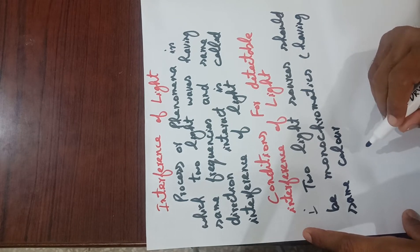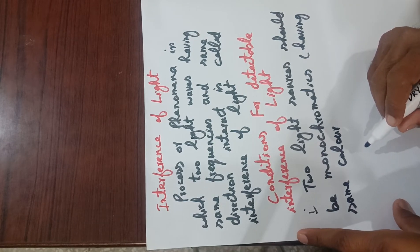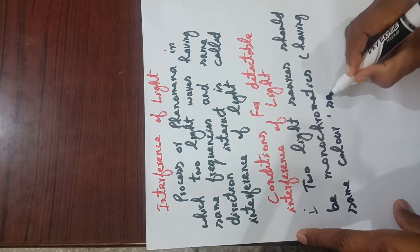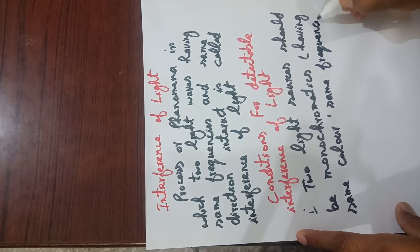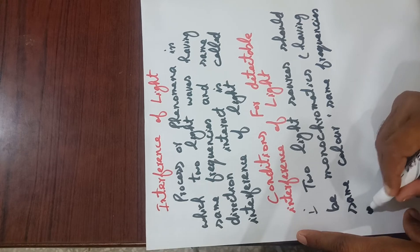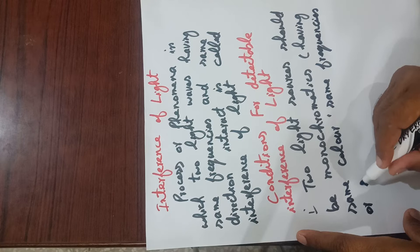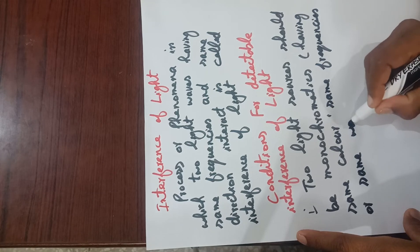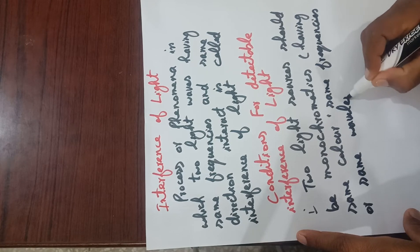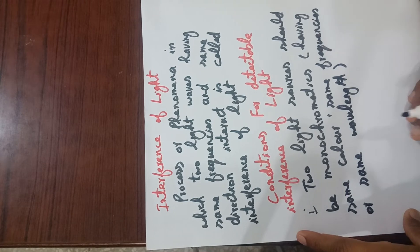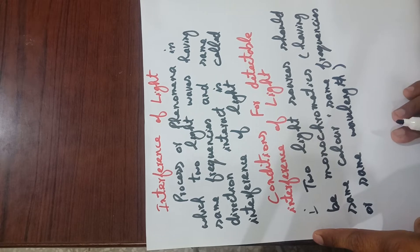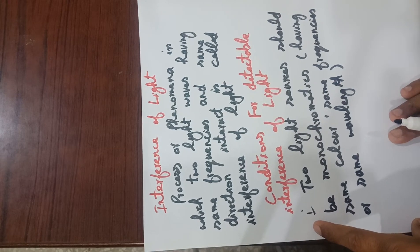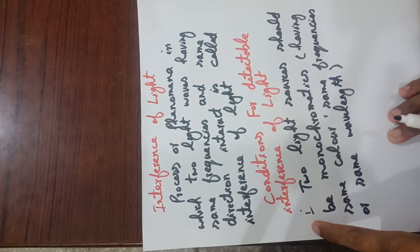The waves of light or rays of light which have the same color, same frequency, or same wavelength are called monochromatic. This is the first condition to produce detectable interference of light.